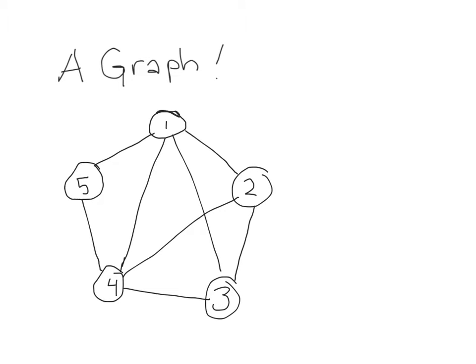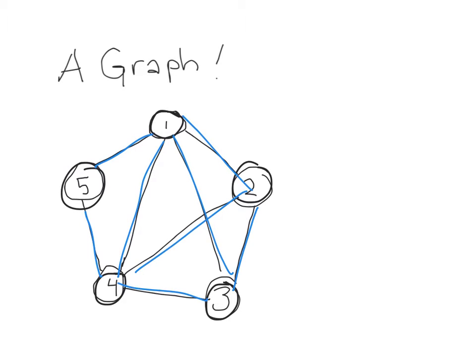A graph is a collection of nodes. So this graph has five nodes and edges. So this graph has one, two, three, four, five, six, seven, eight edges.